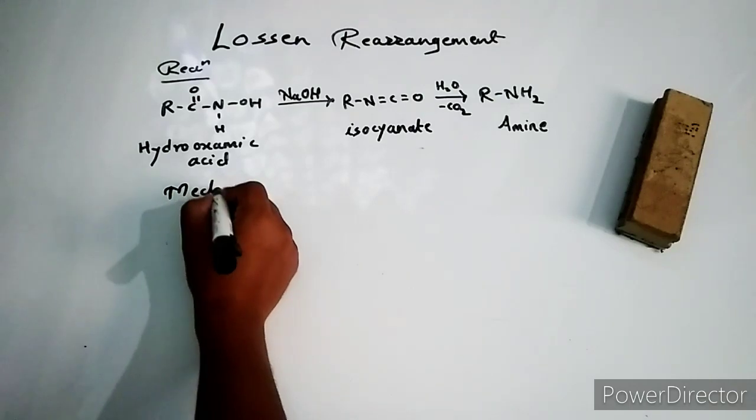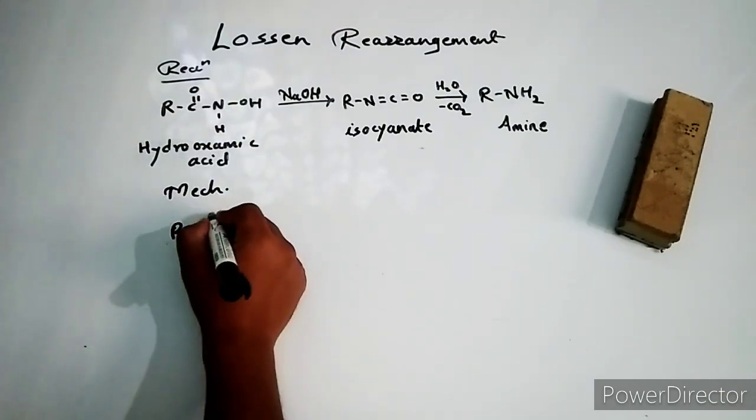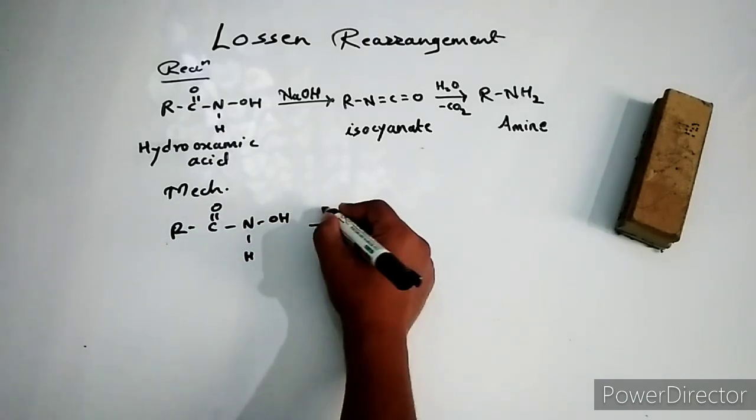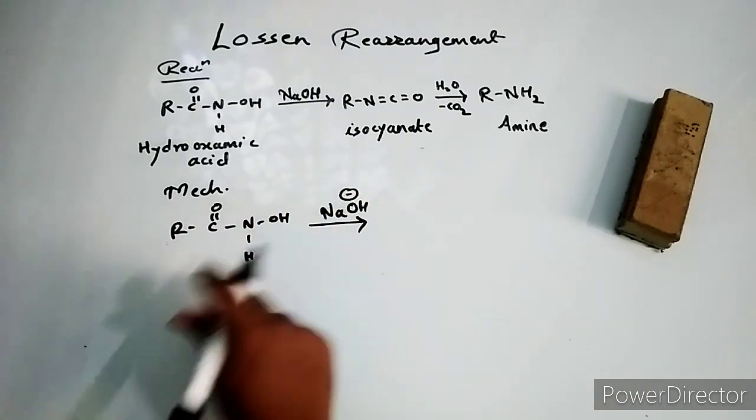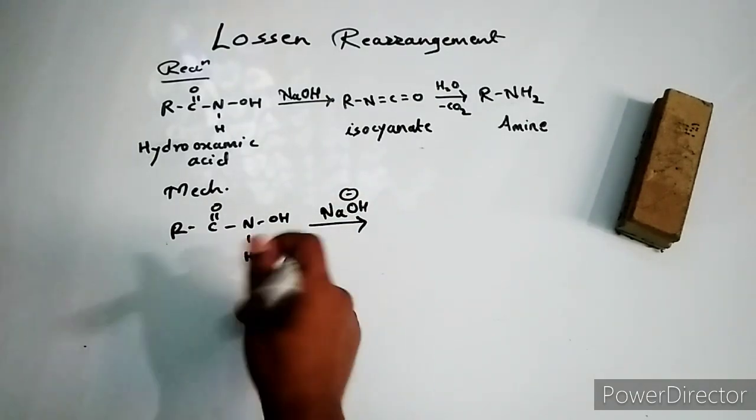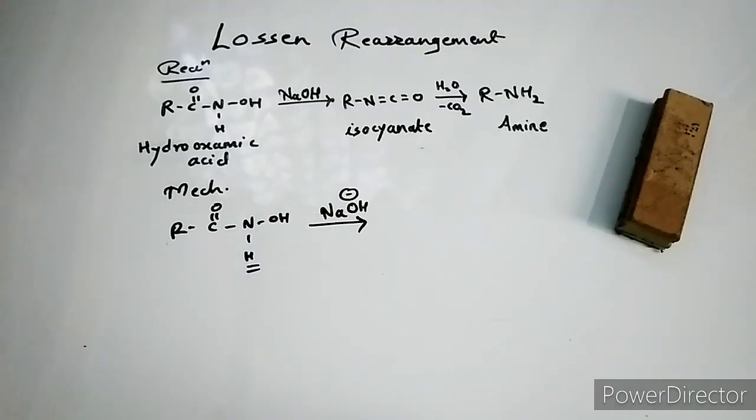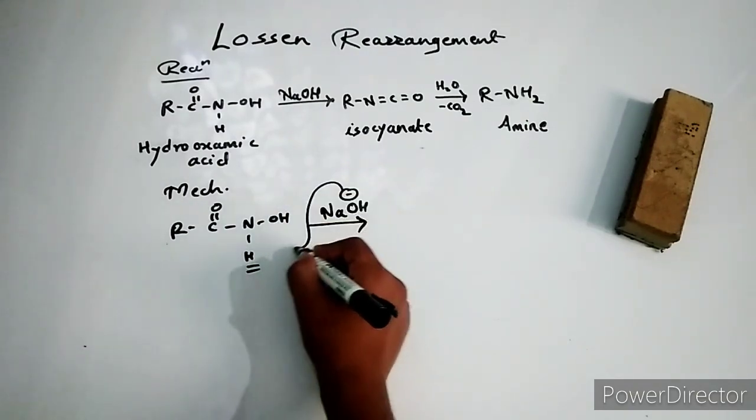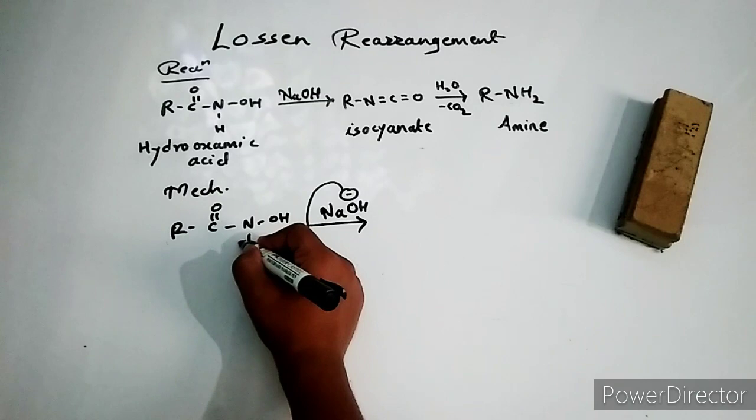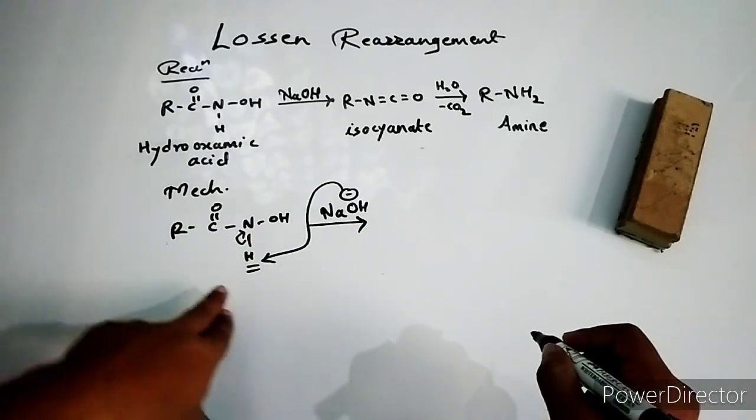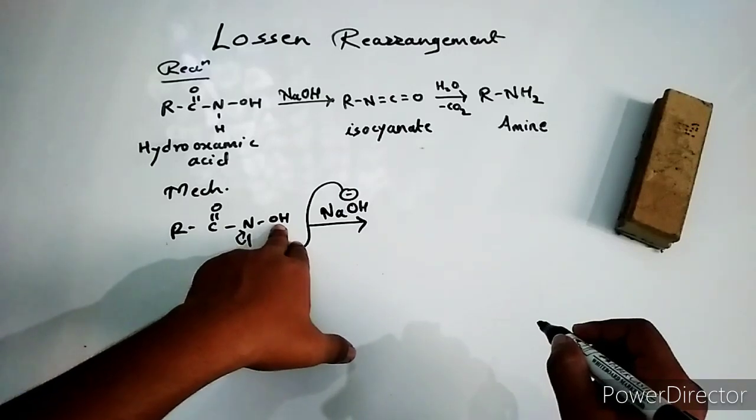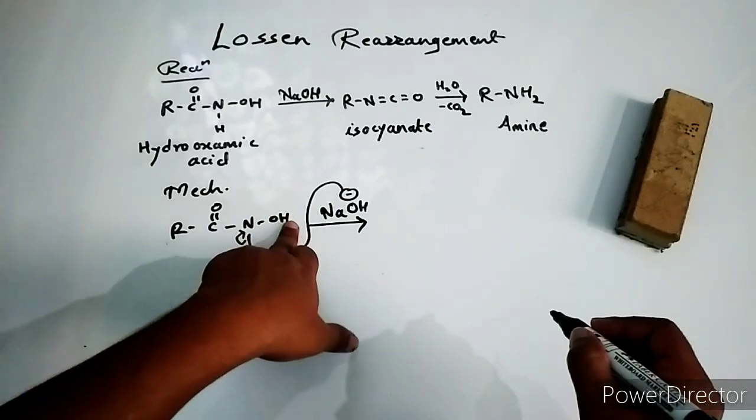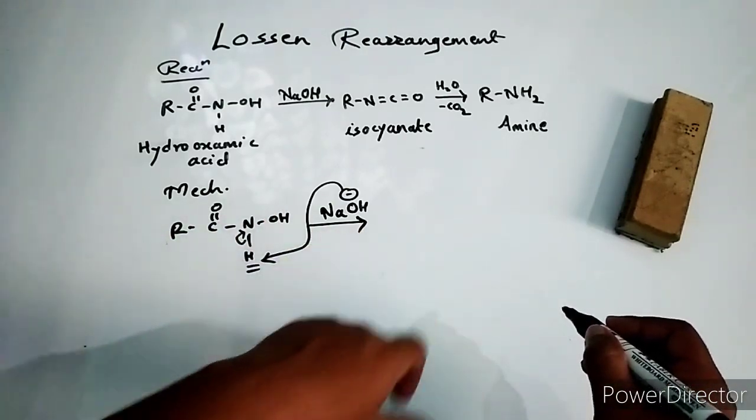In the mechanism we are using sodium hydroxide which is a base. In our substrate hydroxamic acid, this proton with the nitrogen is very much acidic because of its electronegativity, and hence it will abstract this proton. Now one would be thinking oxygen also has a hydrogen and it's again electronegative, but this proton is more acidic than this one.